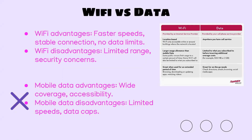If you're too far from the router, you'll be disconnected and can't access the internet. Mobile data fixes that because it gives you wide coverage — there are cell towers in many different places, so your phone can always connect to the nearest one. However, it is slower to transmit to those towers because they're further away, and you do get charged for data. There's usually a cap on how much data you can use, and you're charged for any extra, which can be pretty hefty.